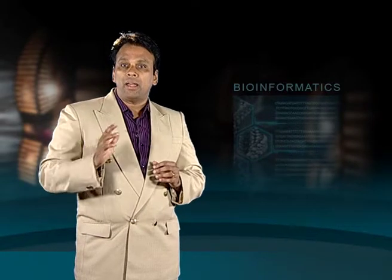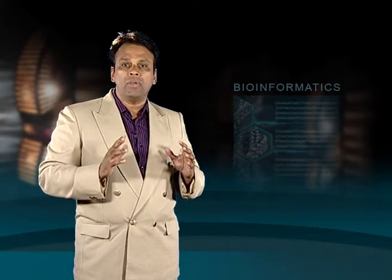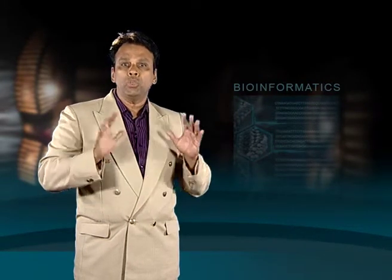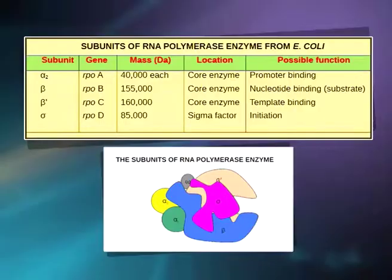The E. coli RNA polymerase has a molecular weight of about 480,000 Daltons and consists of 5 polypeptides including 2 chains of alpha polypeptide, and 1 chain each of beta, beta prime and sigma polypeptides. The details are given in the table as well as in the figure.